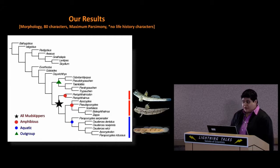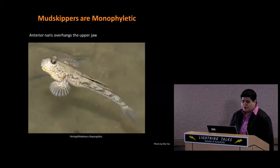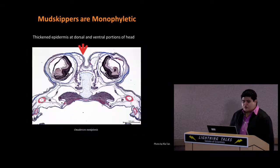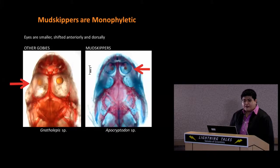We recovered a monophyletic mudskipper clade comprising three distinct clades — one aquatic mudskipper clade and two terrestrial mudskipper clades. We identified several characters found only in mudskippers and absent in all other gobies, such as the elongate anterior nostril which overhangs the upper jaw, thickened epidermis at the dorsal and ventral portions of the head, and eyes that are smaller than most other gobies and shifted anteriorly and dorsally — a condition not seen in any other gobies to this extent.